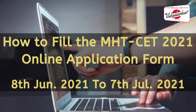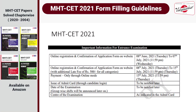Dear students and parents, let us see how to fill the online application form for CET 2021. You need to visit the website mahacet.org for MHT-CET 2021. Online registration and confirmation of the application form is till 7th July.